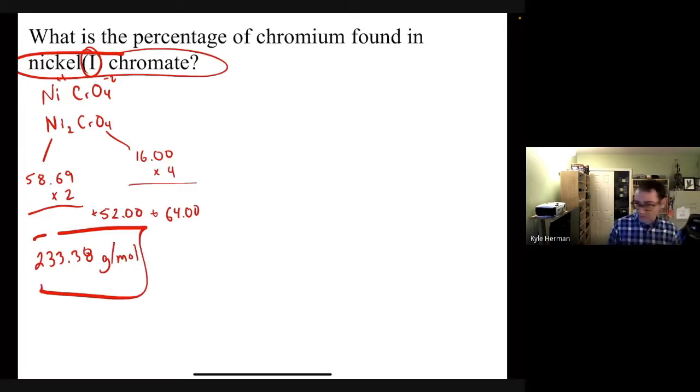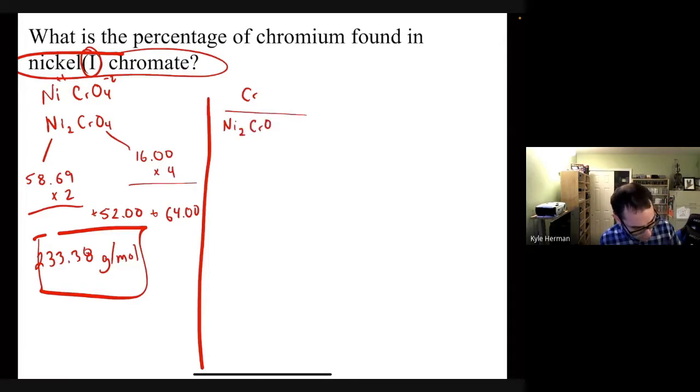All right, so that should be the molecular mass for that. If it's not, let me know. And then the next thing we need to do is figure out the percent composition. So we're looking for chromium found in the nickel one chromate. And the formula for this is you take the part over the whole. So the part is the chromium, the whole is the whole molecule or formula unit there. And then you multiply it by 100, and the unit is percent.